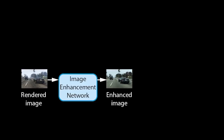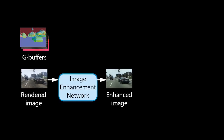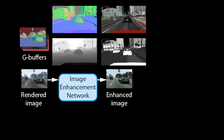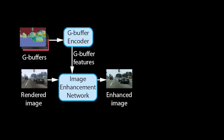Let us now look at our method in detail to understand why it is more stable and produces fewer artifacts. Our method takes a rendered image from the game and passes it through an image enhancement network to produce an enhanced image. We further extract a set of rendering buffers, called G-buffers, produced by the game engine. G-buffers contain geometric information such as surface normals or distance to the camera, material information such as albedo or glossiness, and may also contain information about the lighting in a scene. We pass the buffers through a G-buffer encoder network to produce feature tensors at multiple scales, which encode the information about the rendered scene.